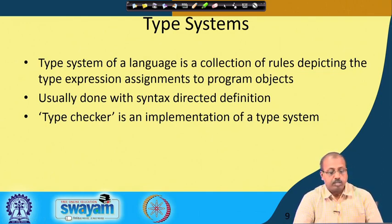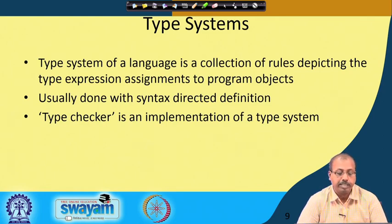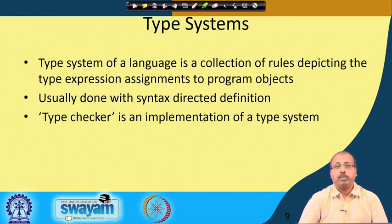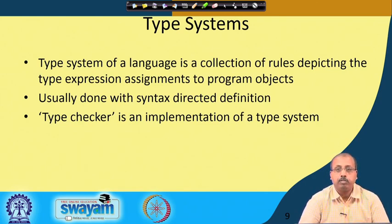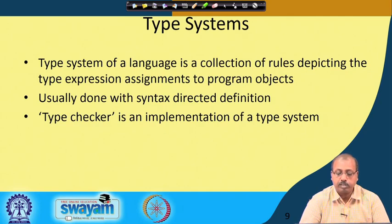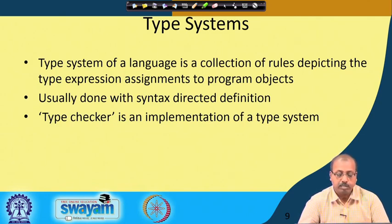A type system of a language is a collection of rules depicting the type expression assignments to program objects. The programming language manual defines what types are allowed and how they are used, giving rise to a type system. Type checking and type conversion are often done in the syntax-directed translation phase. A type checker is an implementation of the type system, and as a compiler designer we have to include a type checker as part of the syntax-directed translation phase.